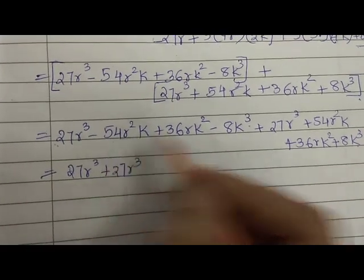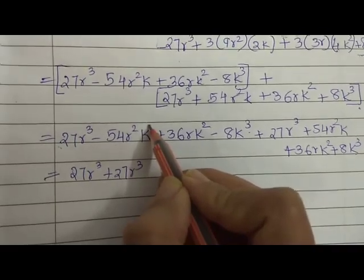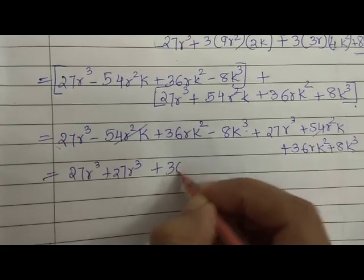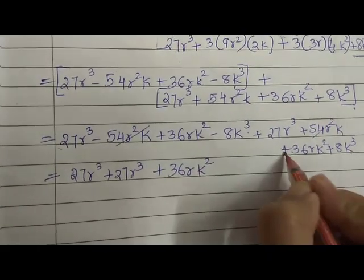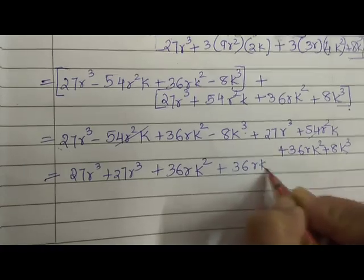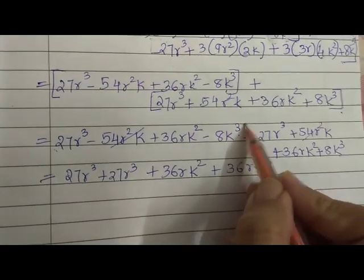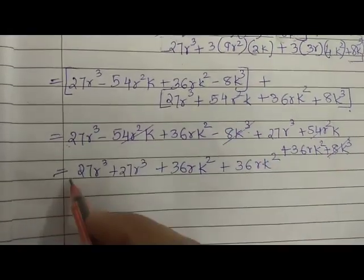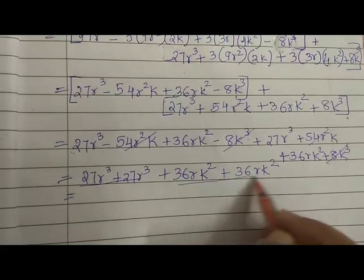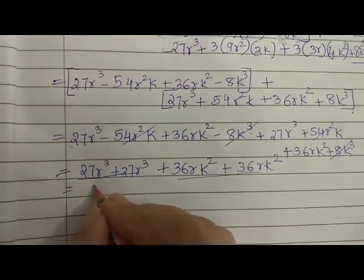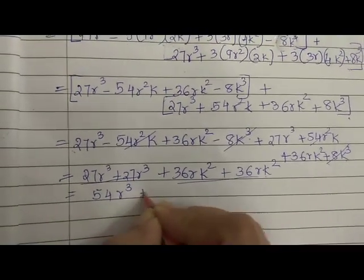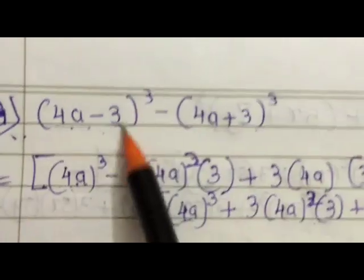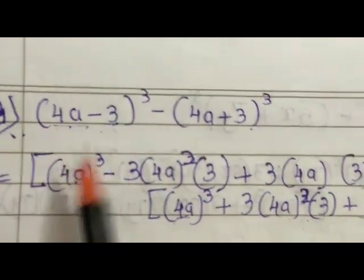Here we have -54r²k and +54r²k — plus and minus get cancelled. Then we have +36rk² and +36rk² — both positive, so they remain. Then again we have opposite signs for the 8k³ terms, so they cancel. Adding the remaining terms: 27 + 27 = 54r³, and 36 + 36 = 72rk². The answer is 54r³ + 72rk².